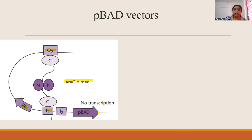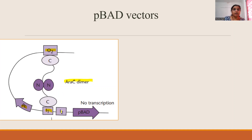This repressed condition occurs when there is no arabinose in the medium — the AraC dimer binds to O2 and I1, forms a loop, and represses the gene under pBAD. But when expression of the gene is needed, this binding must be detached — AraC must detach from O2 and bind to I2 instead. As learned from the arabinose operon, AraC can act as both activator and repressor. For it to act as an activator, arabinose must be added to the medium.